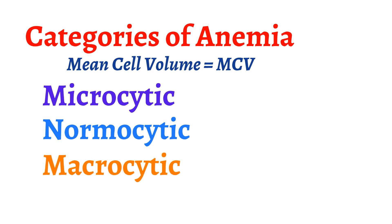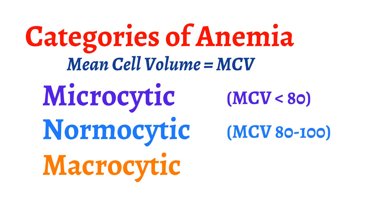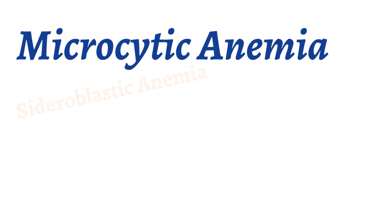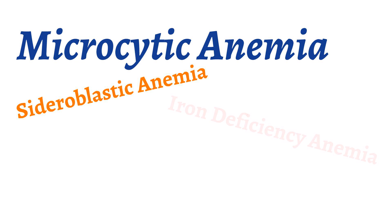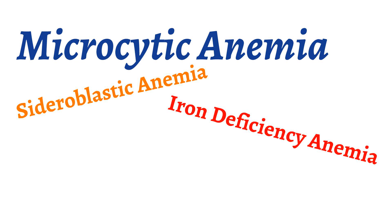A microcytic anemia is defined as an MCV less than 80, normocytic from 80 to 100, and macrocytic with an MCV greater than 100. The causes of a microcytic anemia include sideroblastic anemia, iron deficiency anemia, thalassemia, and anemia of chronic disease. Today we'll focus on iron deficiency anemia.